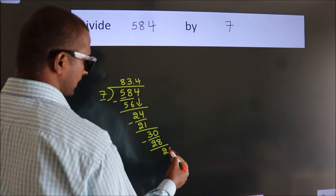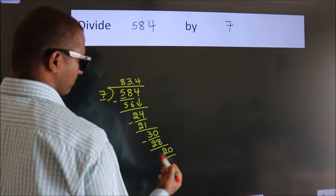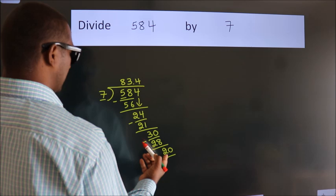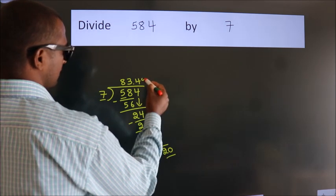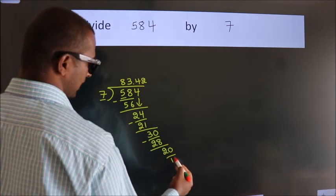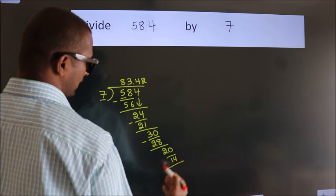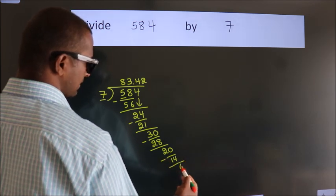So 20. A number close to 20 in the 7 table is 7 threes, 14. Now we subtract. We get 6.